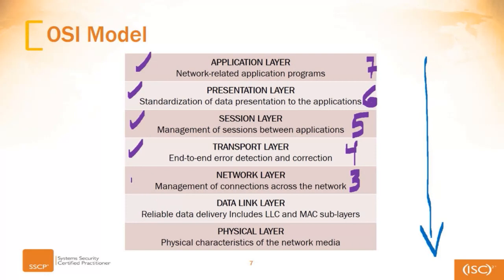Then we're going to move down to the data link layer — put a check mark there. Data link layer, layer two. What's called the DL or data link layer.